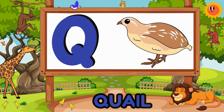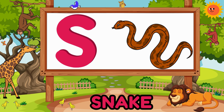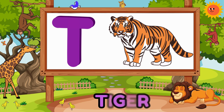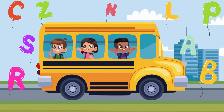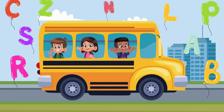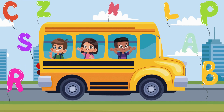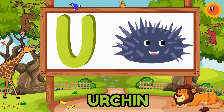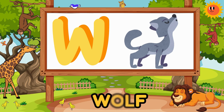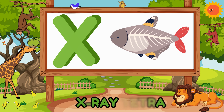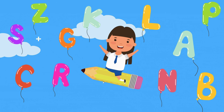U is for urchin in the ocean. R is for rabbit hopping in a line. So let's sing our phonics from A to Z.